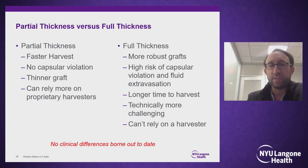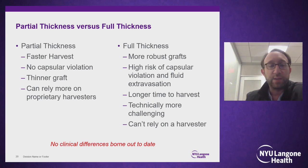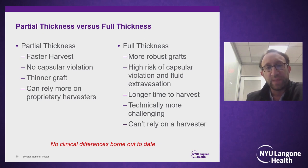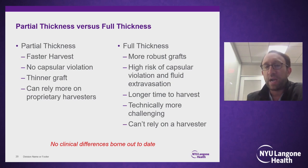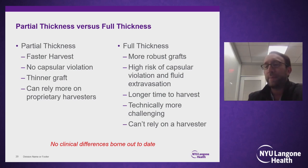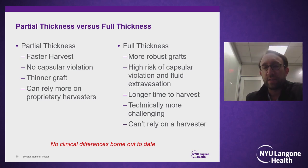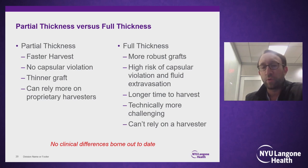Partial thickness grafts may offer a faster harvest, no capsular violation, and more reliable use of proprietary harvesters. Full thickness grafts carry a slightly higher risk of capsular violation and fluid extravasation, but if that occurs, you can easily put a stitch in to minimize it. Full thickness is technically more challenging and easier to perform under direct visualization using a 15-blade rather than a harvester.